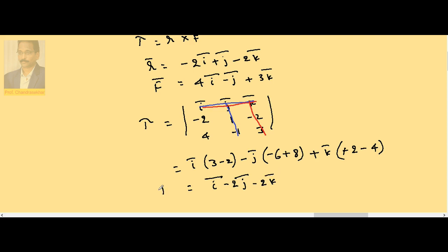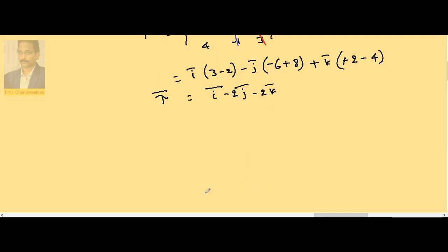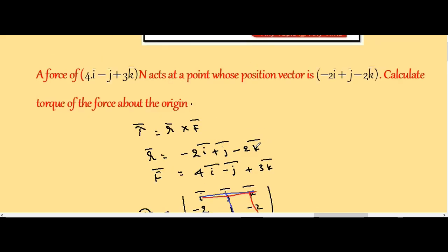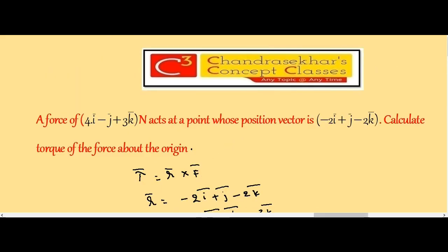This is the τ vector. So if you want to find out the magnitude, then tau is given by √(1² + (-2)² + (-2)²) = √9, so it is 3 newton meter. So here τ is nothing but r × F, the cross product of torque and position vector.